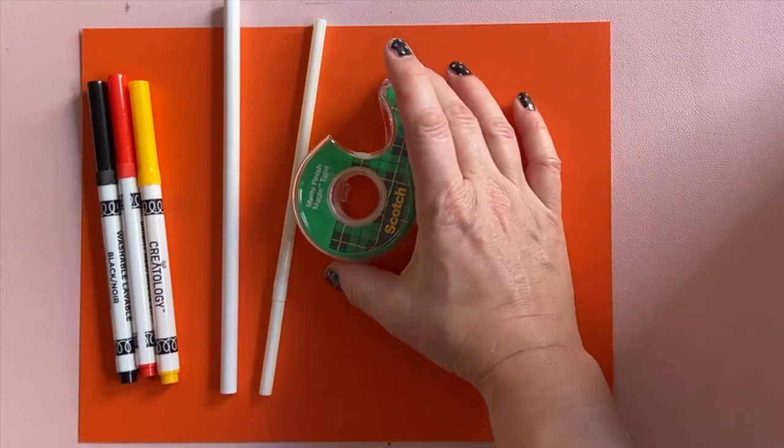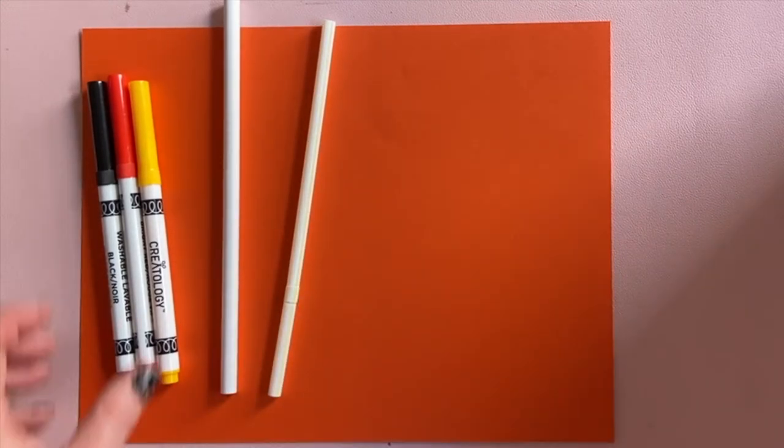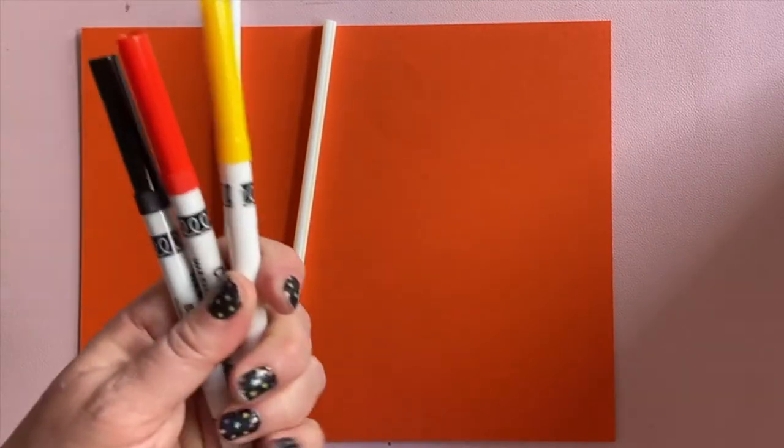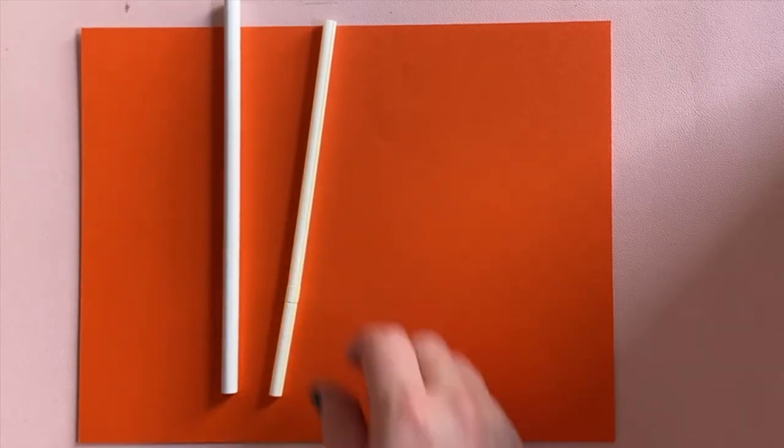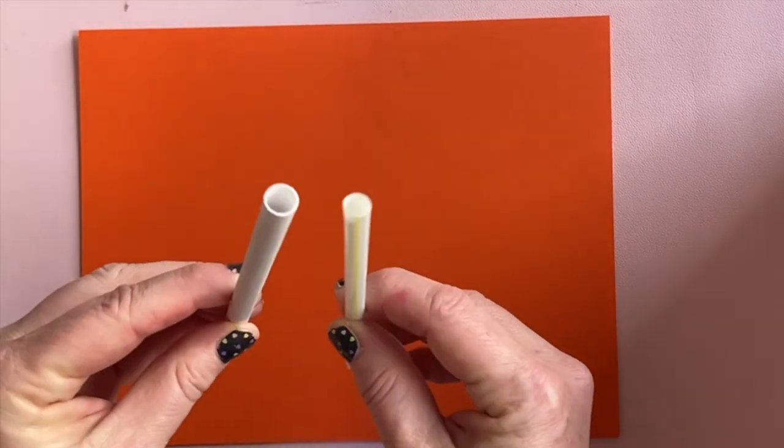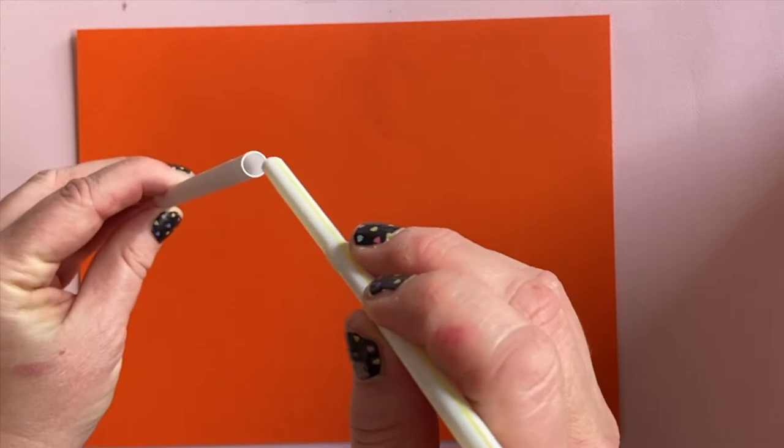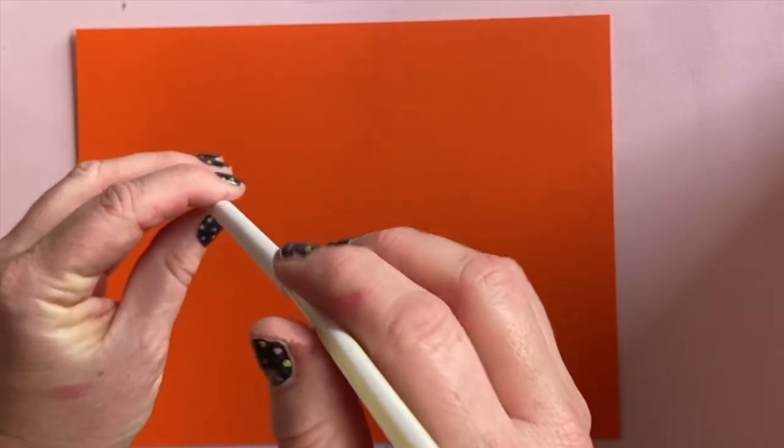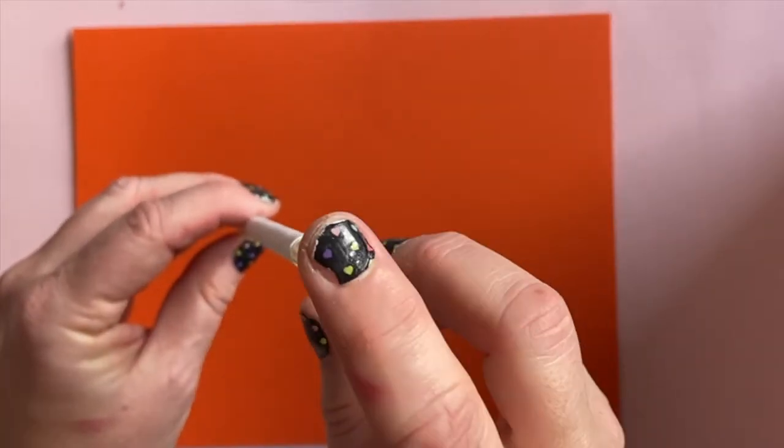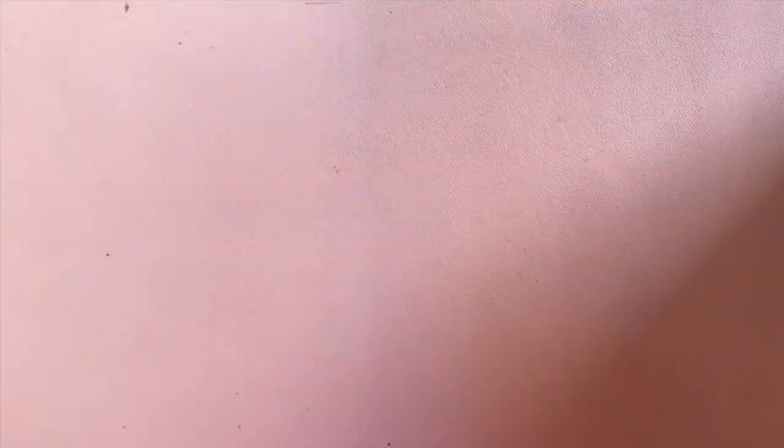Here's what you need: a pair of scissors, scotch tape, markers in Monarch colors - yellow, orange, and black - two straws where one needs to be a little bigger than the other. Slide one inside the other to make sure. It could be paper or plastic, and a piece of orange construction paper.